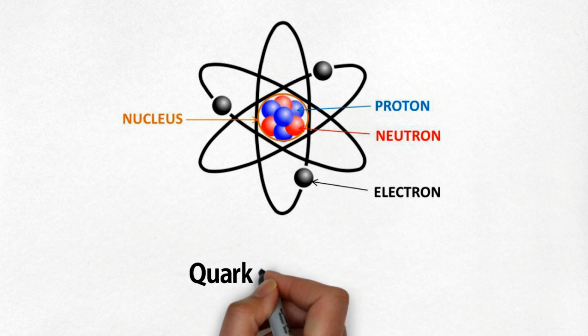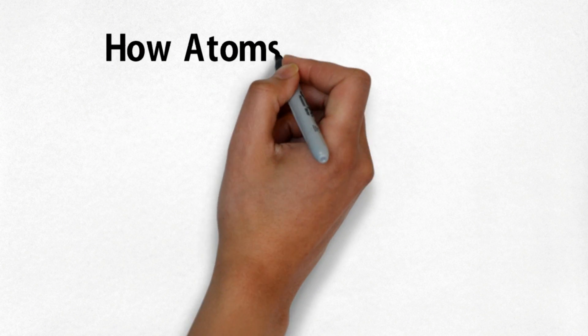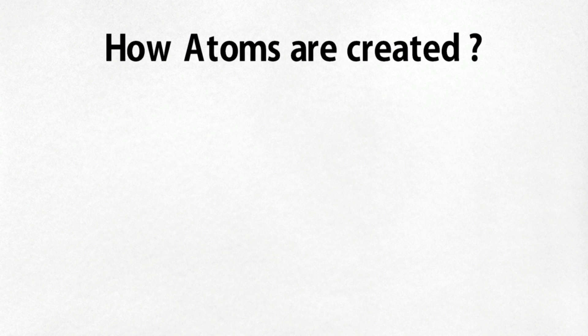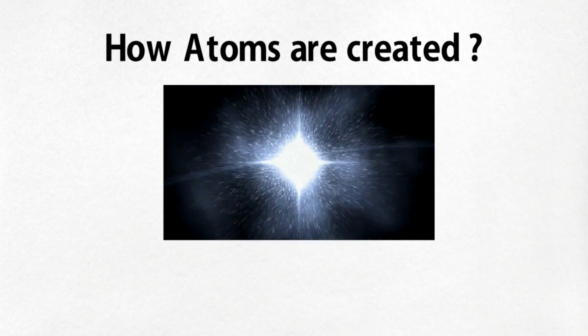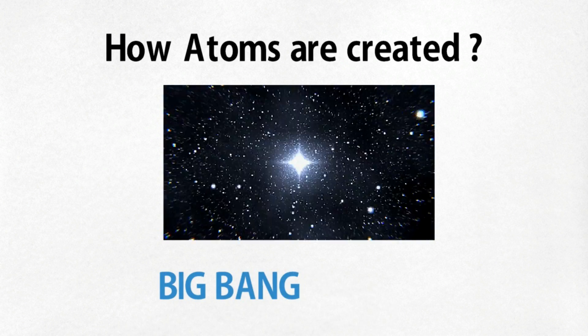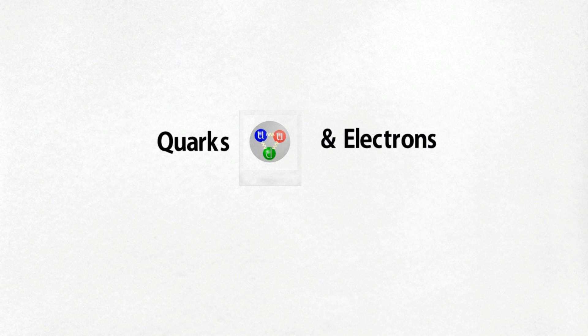Now let's talk about how atoms are created. Atoms were created after the Big Bang, which happened 13.7 billion years ago. As the hot, dense new universe cooled, conditions became suitable for quarks and electrons to form.